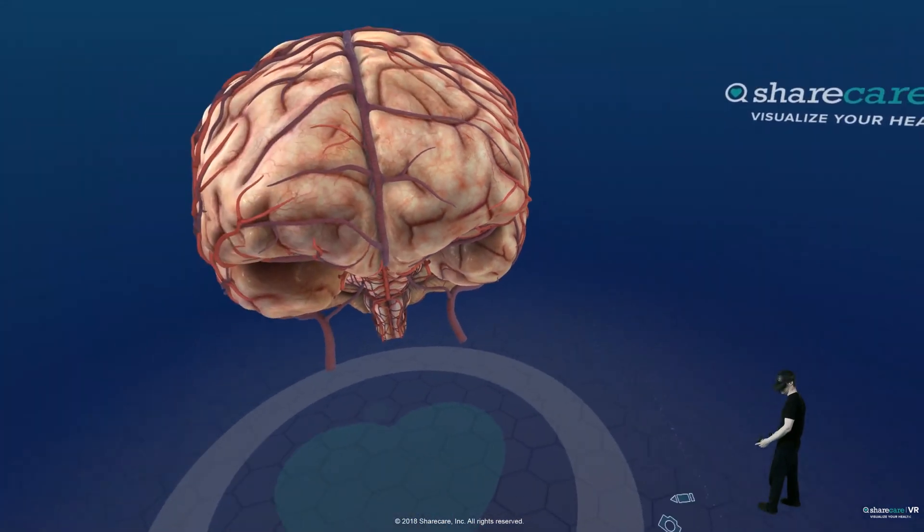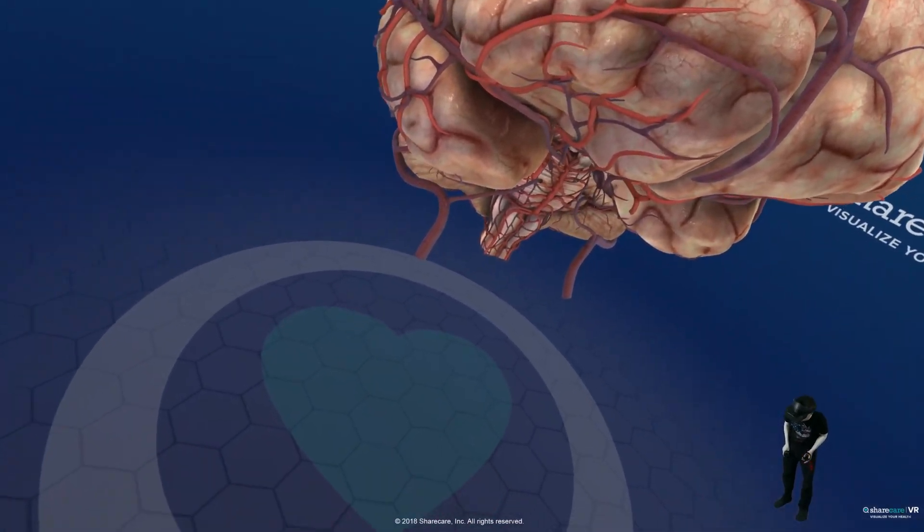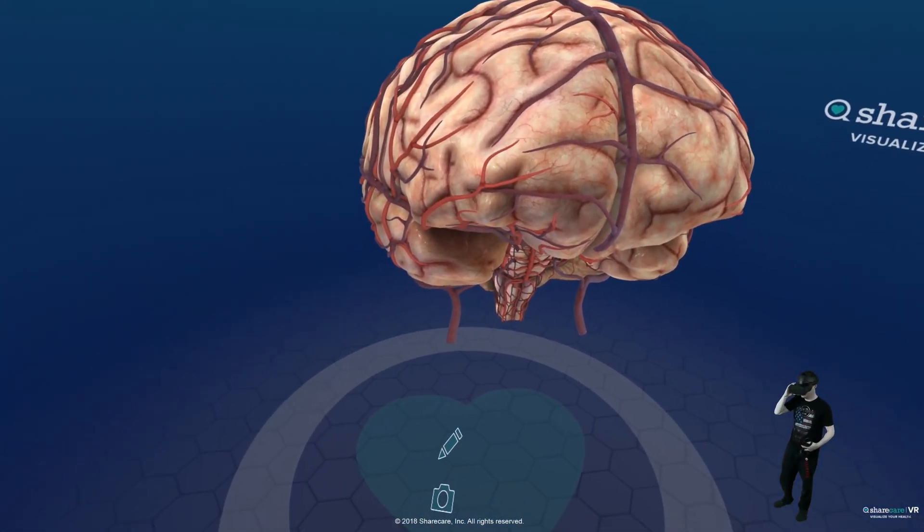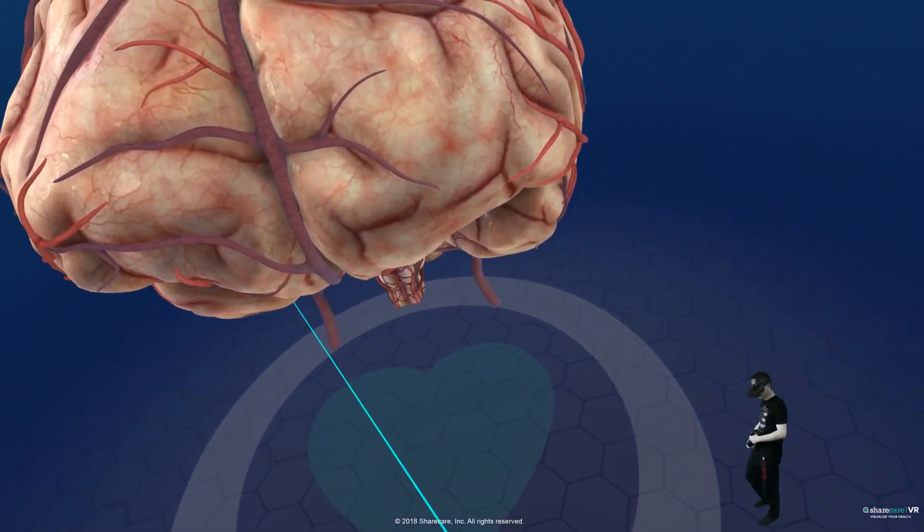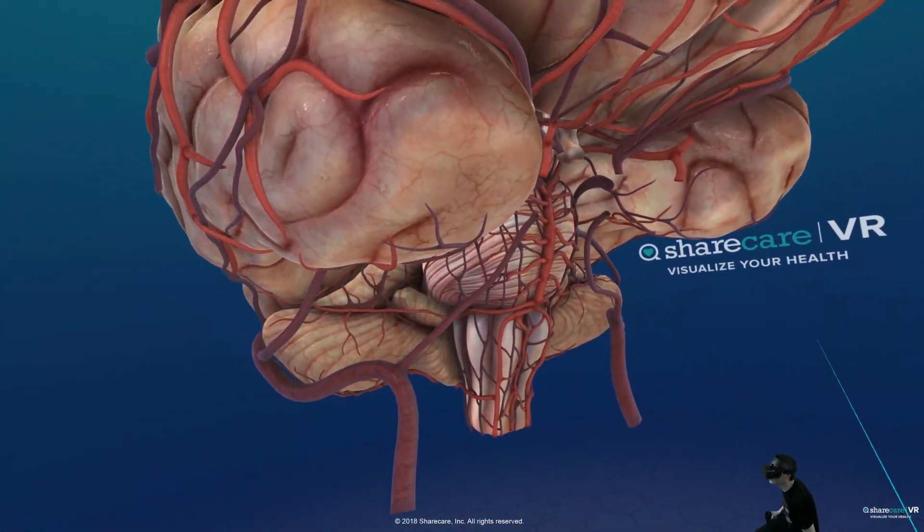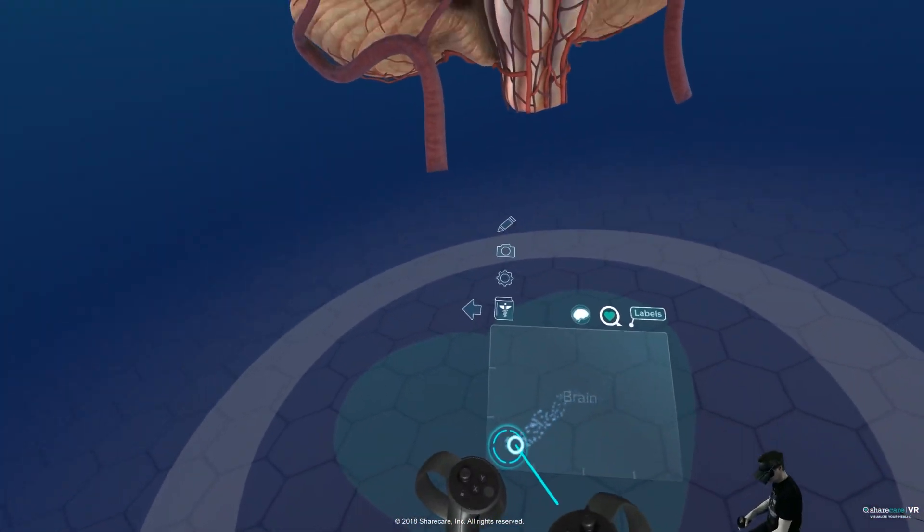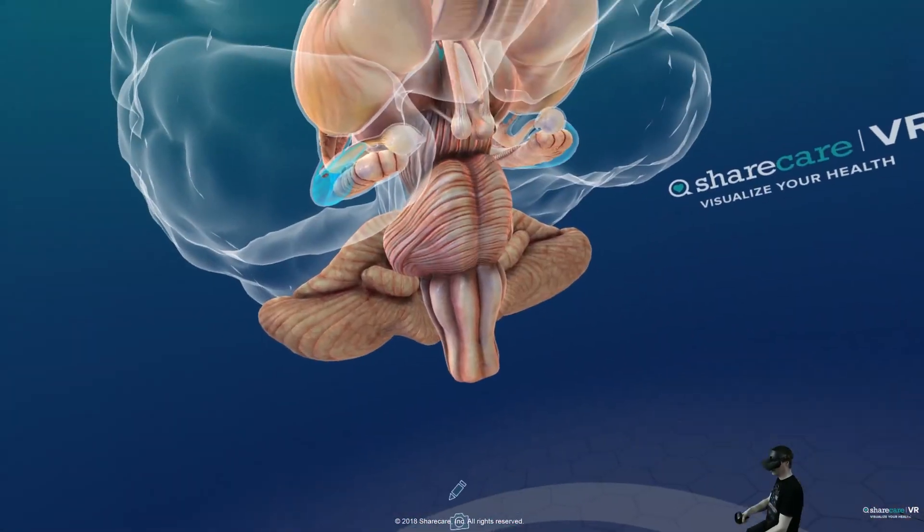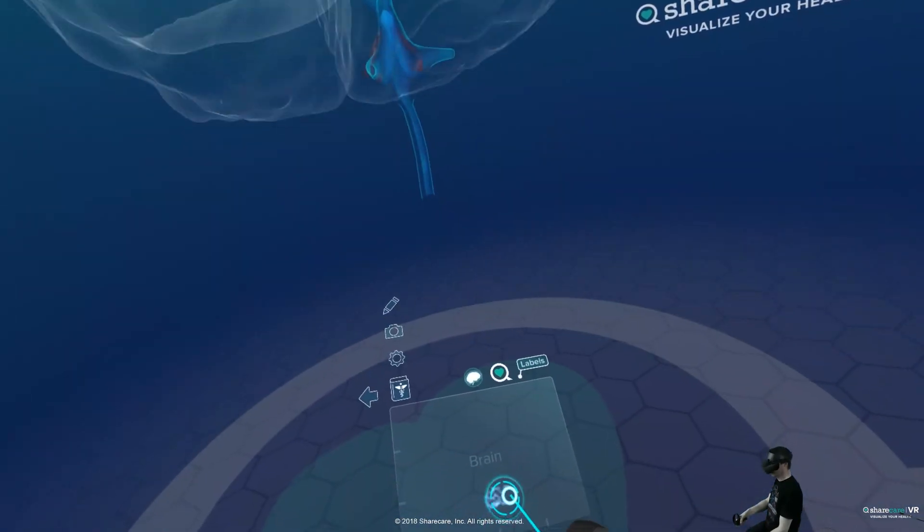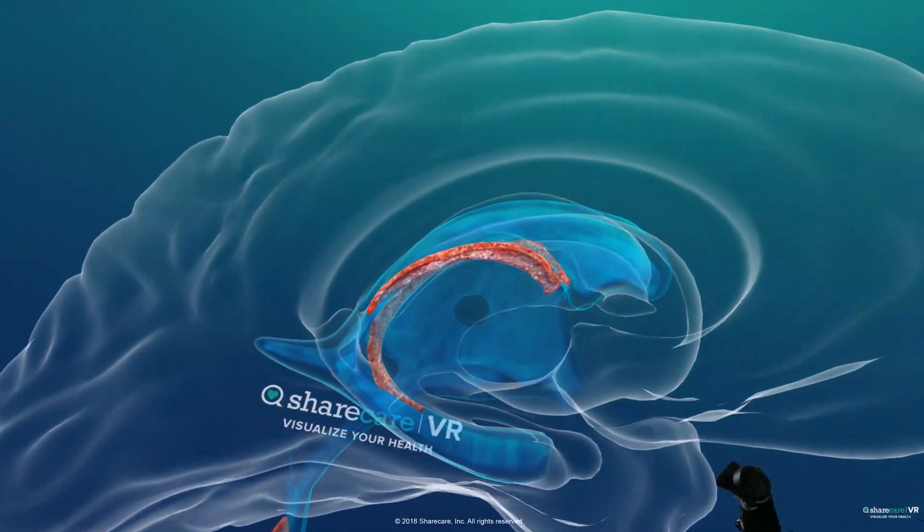We can jump from the other part there as well. So here we have the brain. As we are in virtual reality, we can of course walk around here. We can check everything out, like from beneath. We can also look inside the brain here with our tablet and see it from inside.